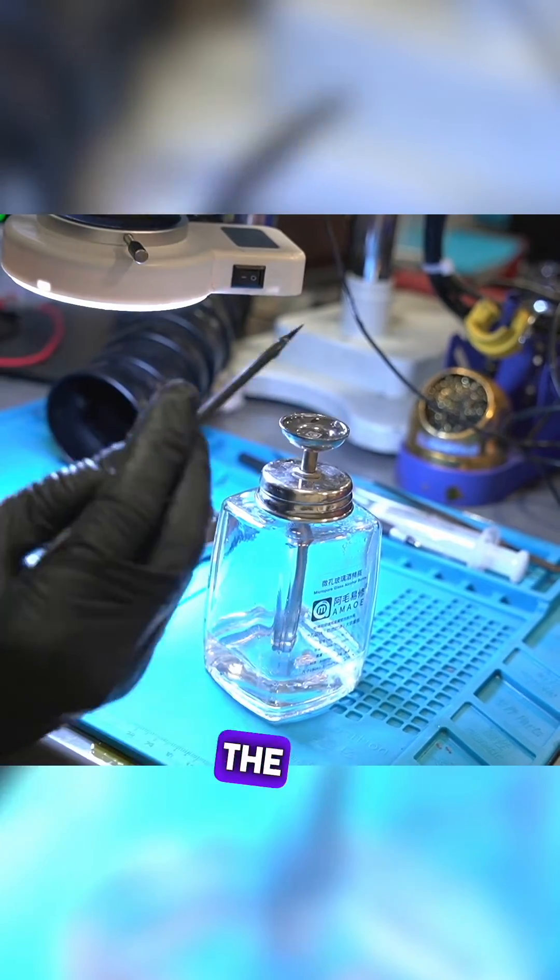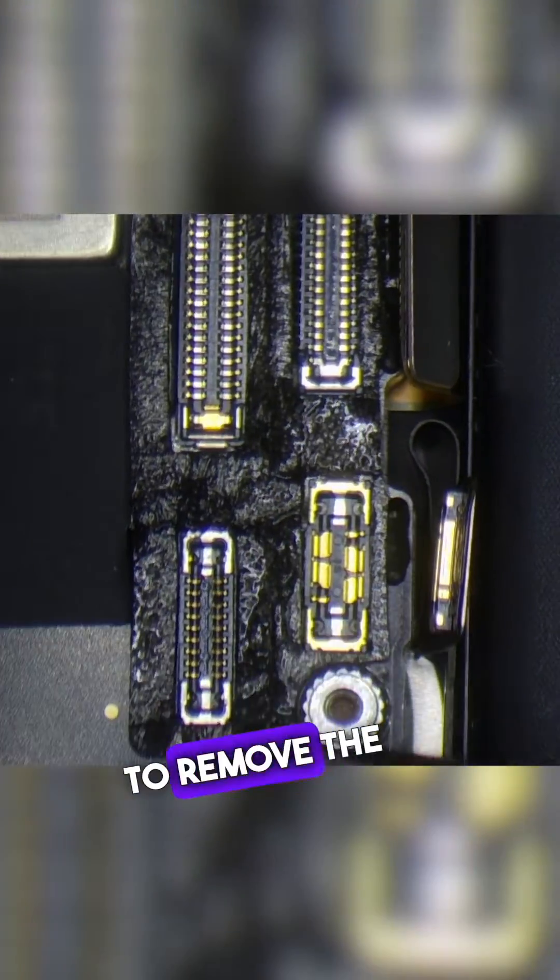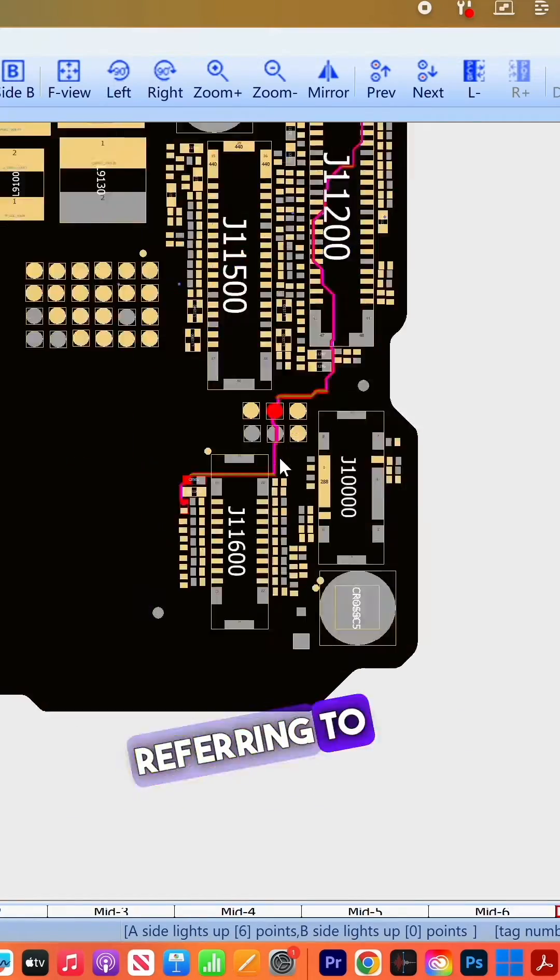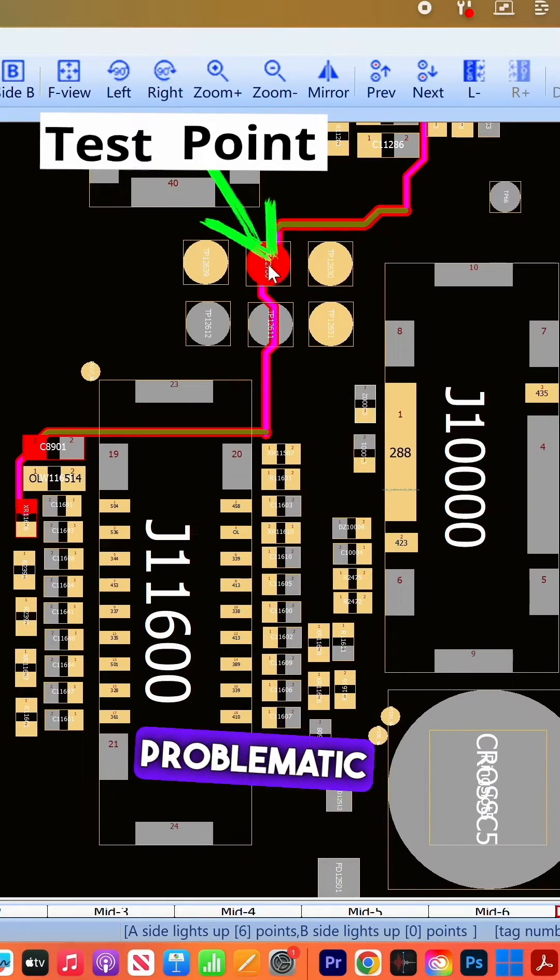To find the component causing the short circuit, we move to the next step. We use alcohol to remove the foam around the touchscreen connector. Referring to the diagram again, we identify the test point related to the problematic line.